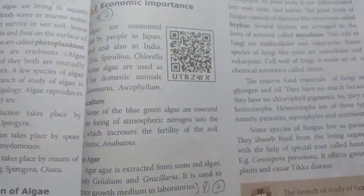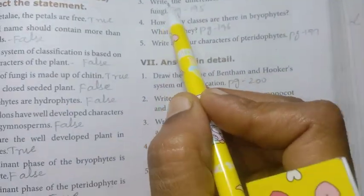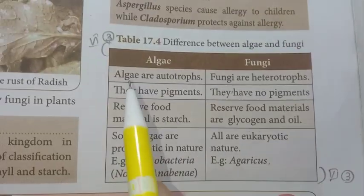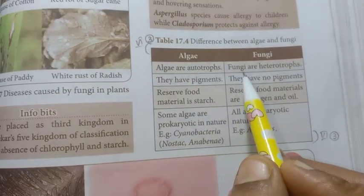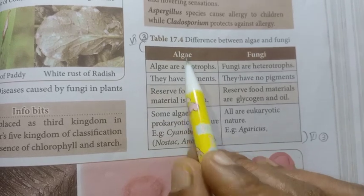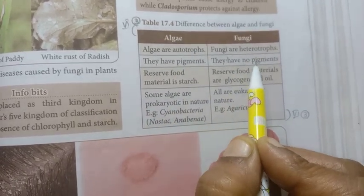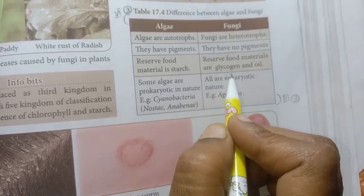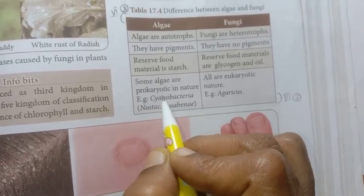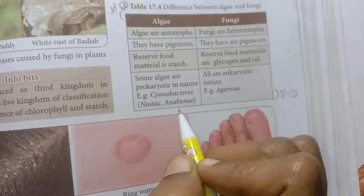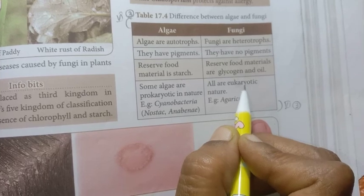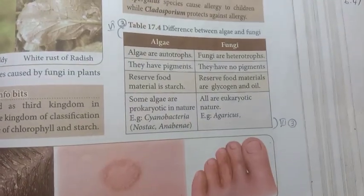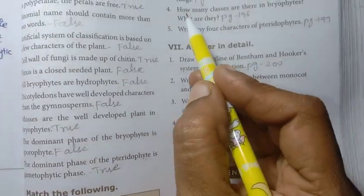Those are the economic importances of algae — you can choose any three. Third question: Write the differences between algae and fungi. Algae are autotrophs; fungi are heterotrophs. Algae have pigments; fungi lack pigments. Reserve food material in fungi is glycogen and oil.